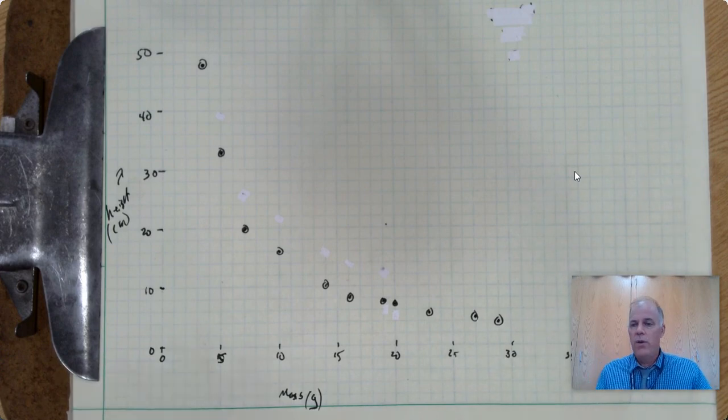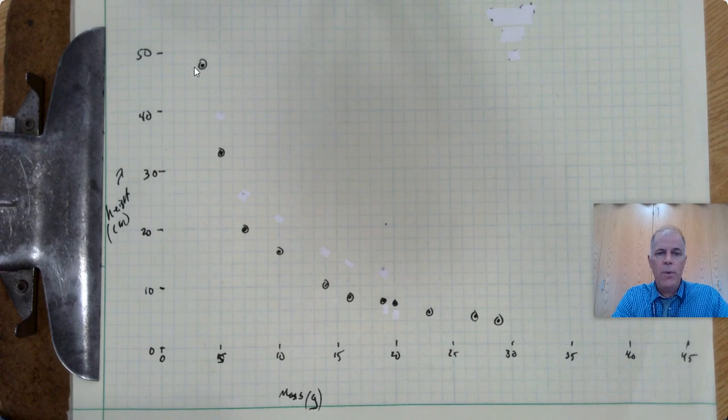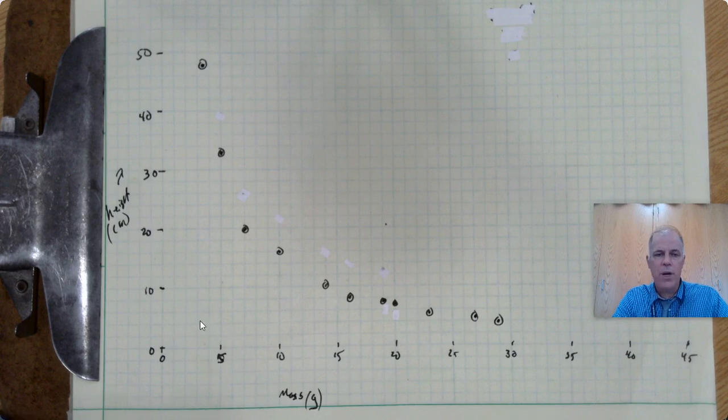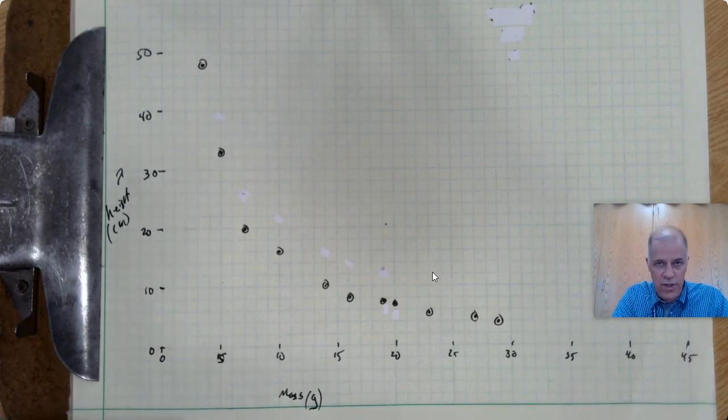As you recall, for our data we wound up with a curved plot when we made a graph of the mass of the jumpers versus how high they went. When we plotted all those points, we got a curve that looked something like this. Now this is not the data from your class, this is a set of data that I've created for this exercise, but it's very comparable to yours and the concepts are exactly the same.